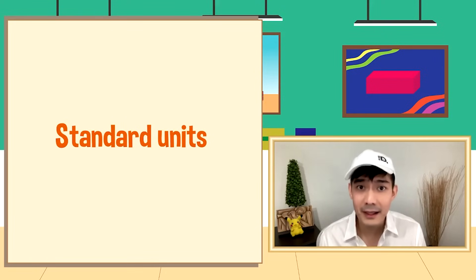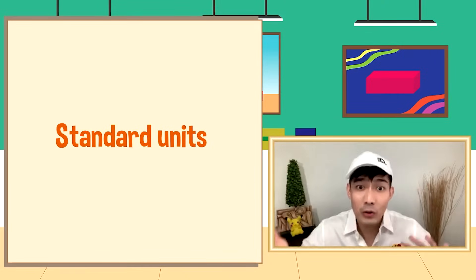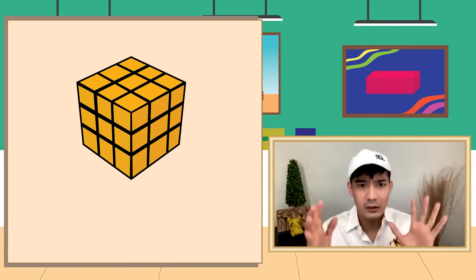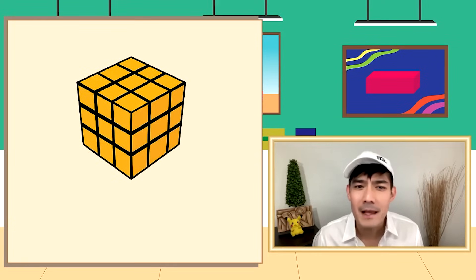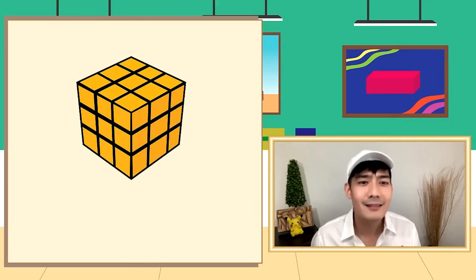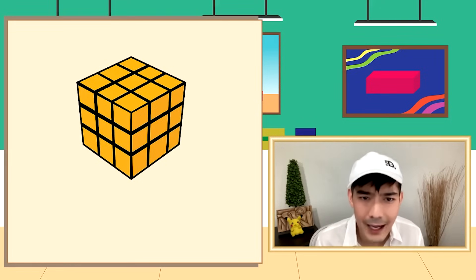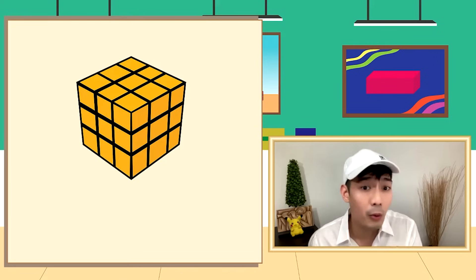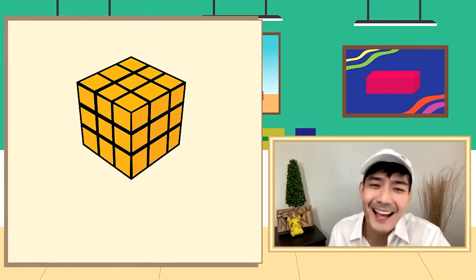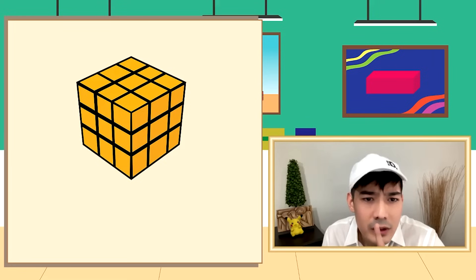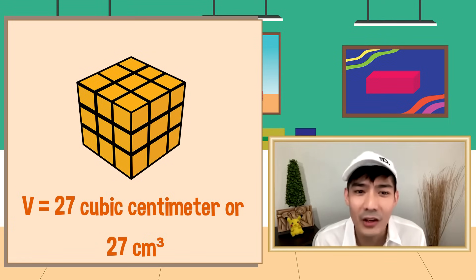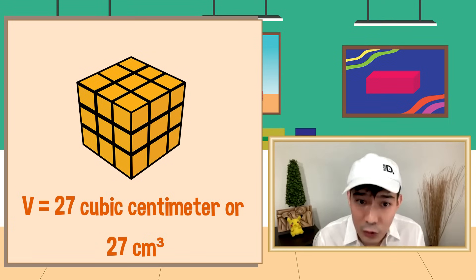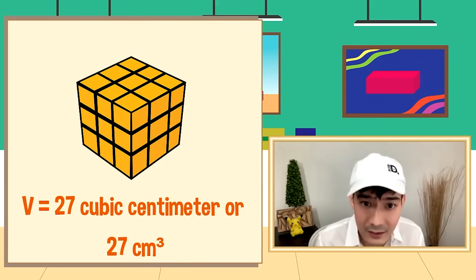Gold yung kulay ng museum piece na ito. Ganda, di ba? Now, let's try to find the volume of this Rubik's Cube. Para mahanap ang volume, bibilangin lang natin ang number of cubes na bumubuo dito. Let's count: one, two, three... Meron tayong 27 cubes. Therefore, ang volume nitong Rubik's Cube ay 27 cubic centimeters. Bakit 27 cubic centimeters? Dahil ang isang cube ay equal to 1 cubic cm — nakikita natin yung label dito: 1 cm may 3 sa taas. Yan yung tamang pagsulat ng label for cubic centimeters.